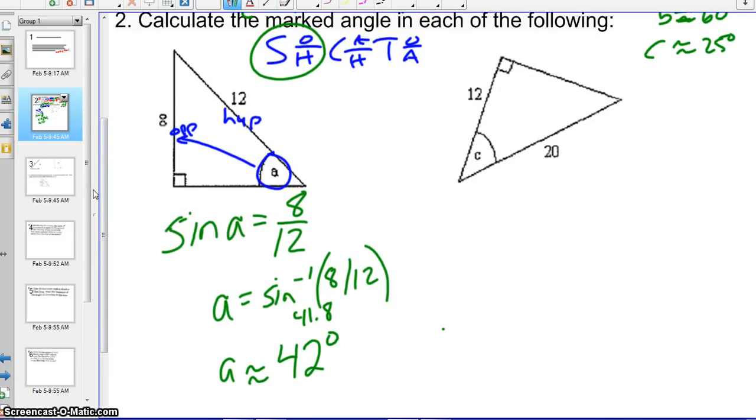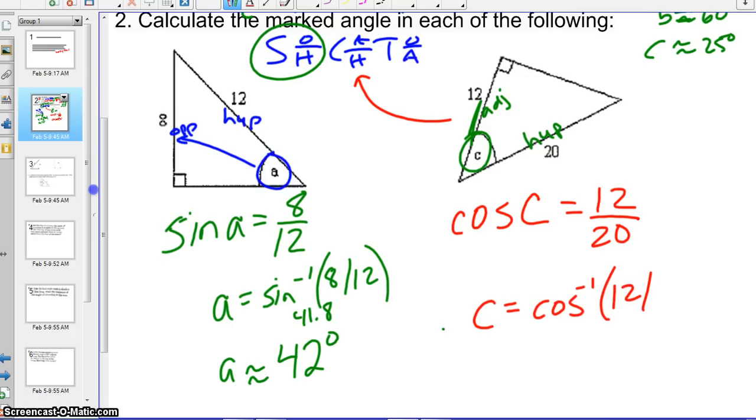We're solving for C. We're given the hypotenuse, we're also giving the side adjacent to it. So going with the adjacent and the hypotenuse, we see that we are going to use the cosine. Cosine of angle C is adjacent over our hypotenuse. And then when we take the inverse cosine of each side, type that into our calculator, and we get that C is about 53.1. And if we were rounding that to the nearest degree, it would be 53 degrees.